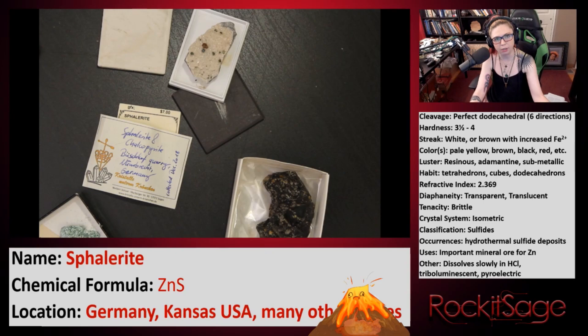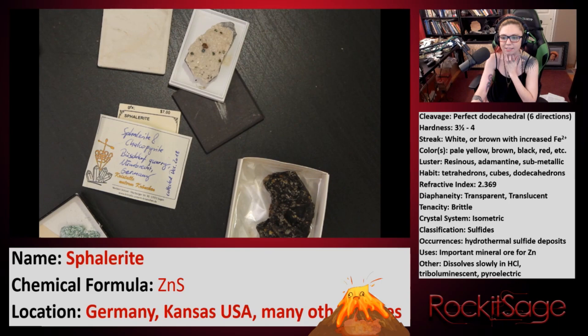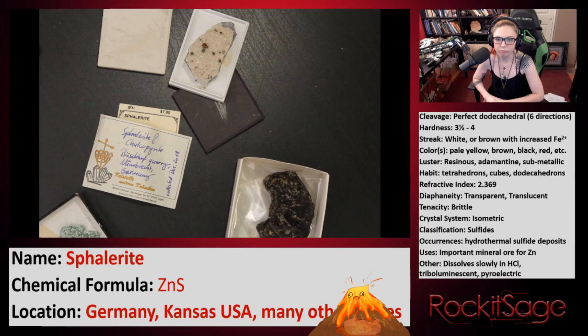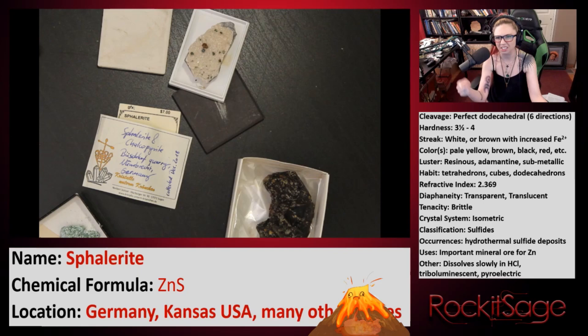The streak is darker with increased iron content. It can alter to oxides, hydroxides, sulfates, or carbonates of zinc and iron. It dissolves slowly in dilute HCl — not going to effervesce like the carbonates do, but it will dissolve slowly. You don't want to do this because it will release sulfuric acid and smells like rotten eggs. You don't want sulfuric gas in your house.